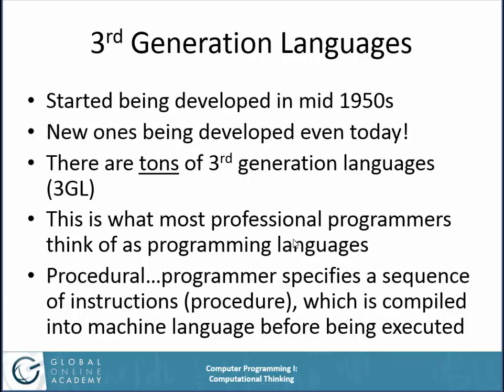Third generation languages started being developed in the mid-1950s. Some famous ones from then, like COBOL and FORTRAN, are still in use today, though their use is getting less and less. There are new ones being developed even today. This is what most professional programmers think of as programming languages — they're procedural. The programmer specifies a sequence of instructions, a procedure, which is then compiled into machine language before being executed. It doesn't have to track one-to-one with the actual instruction set on the CPU. You could have a statement like 'x equals y plus 7' and that might turn into three or four different machine language instructions. The program that translates human-readable code into something runnable by the computer is called a compiler.